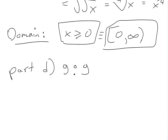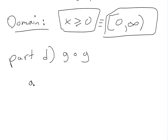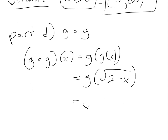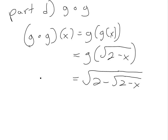Now let's look at the last example, g circle g — or g composited with itself. Similar to above, by definition this equals g of g of x. We get g of square root of 2 minus x, and plugging into g gives square root of 2 minus square root of 2 minus x. That's a lot of square roots! So this is our function.